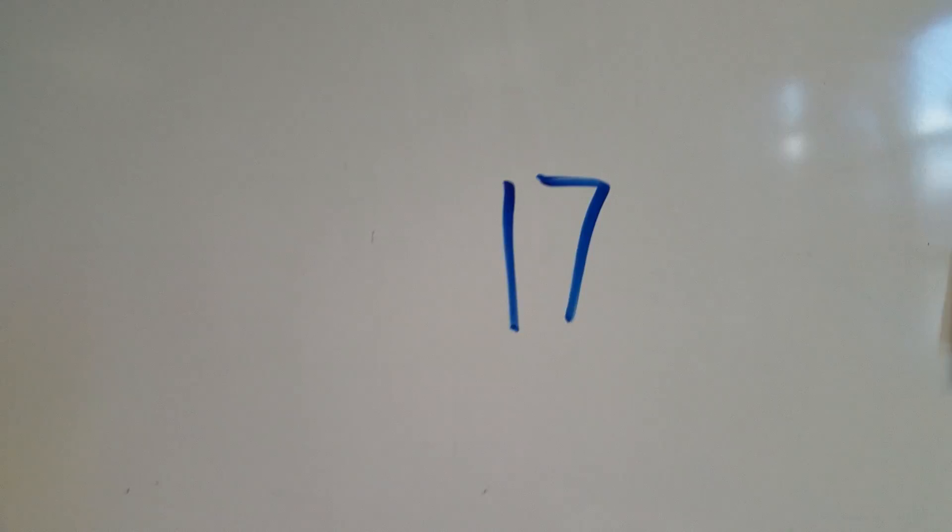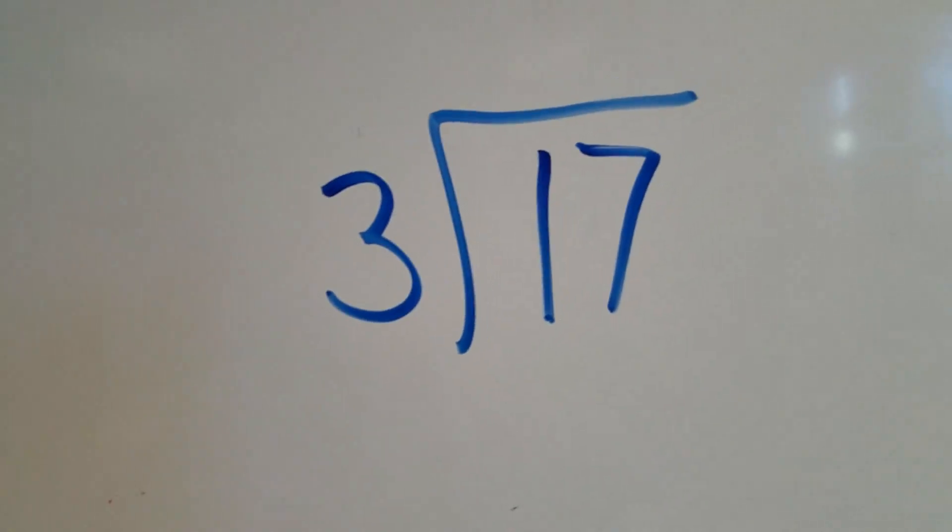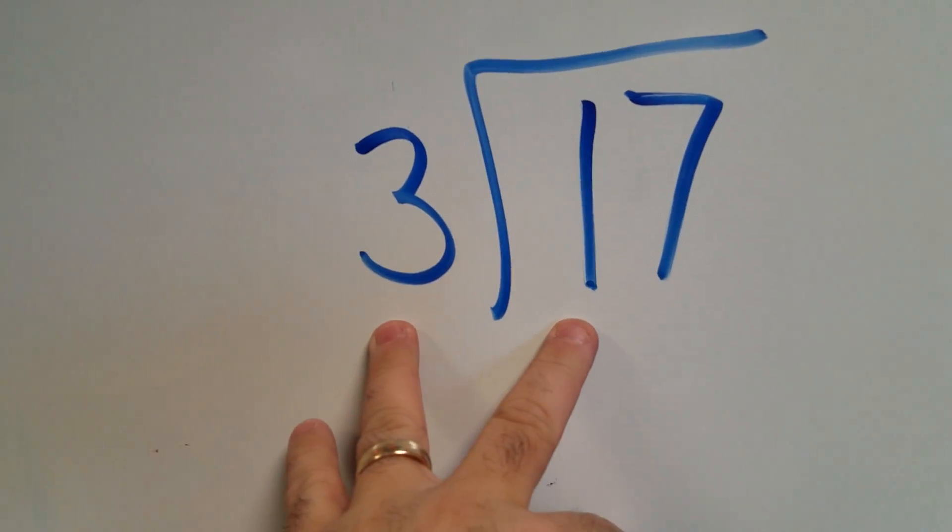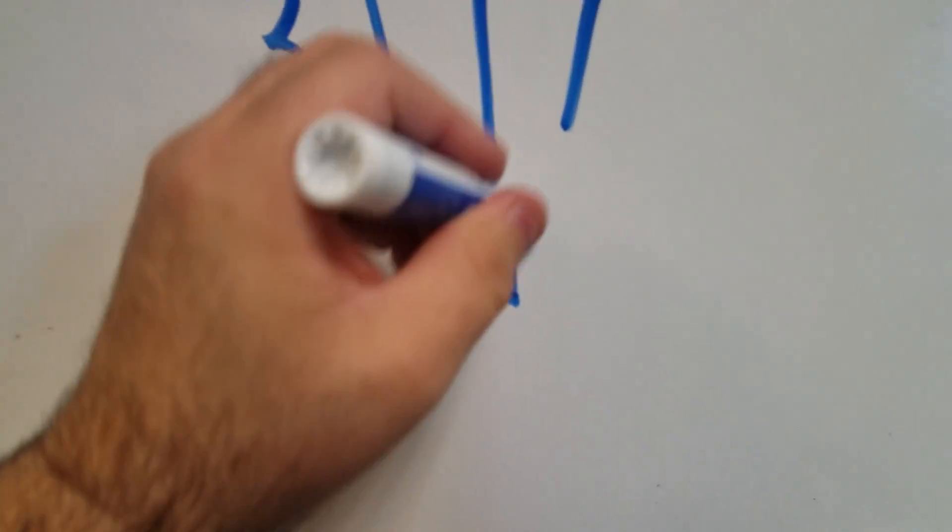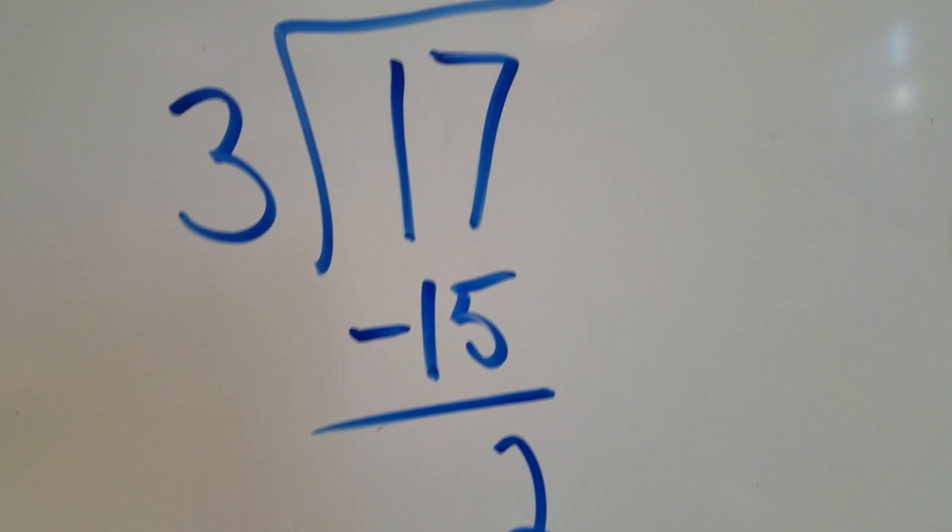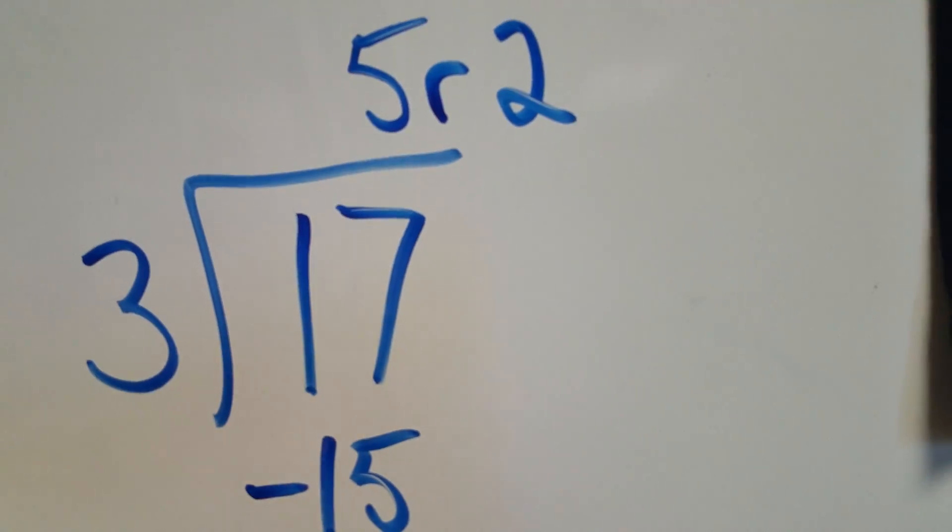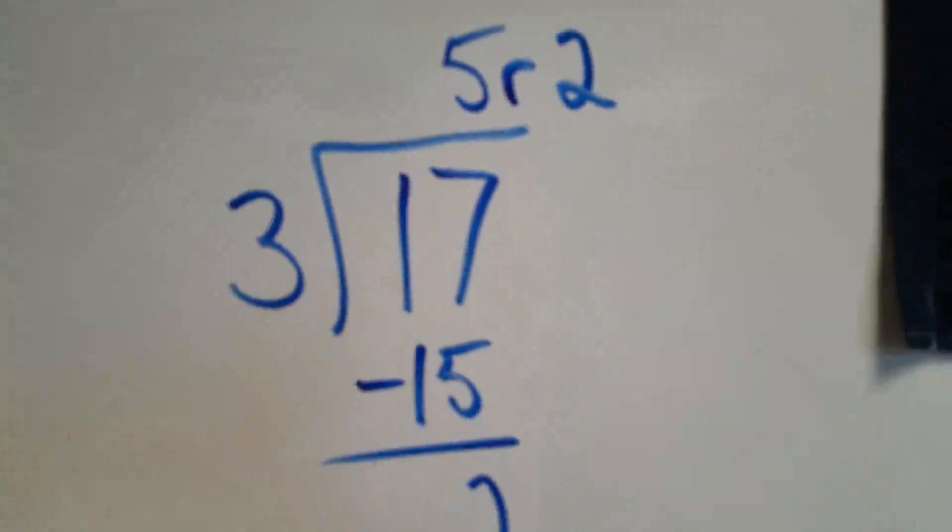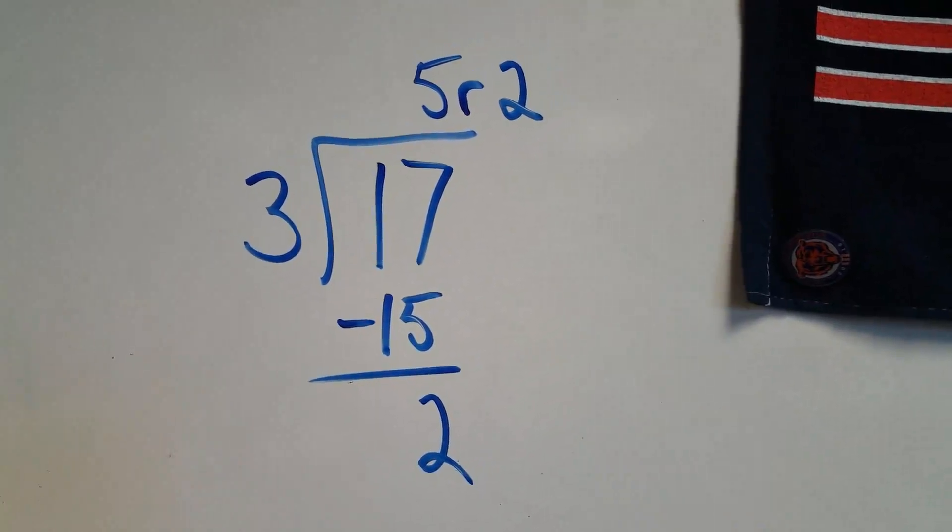Again, this is a division problem. So I have my 17 bars of chocolate, and I'm going to divide that by my 3 friends. Well, I know my times table. So 3 times 5 is 15. So I subtract 15 from 17, and I get 2. There are no other numbers to bring down. So my remainder goes up here. So my answer, of course, how many bars of chocolate do they get? Well, that's 5 bars, remainder 2.